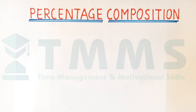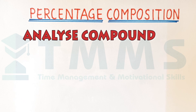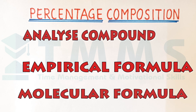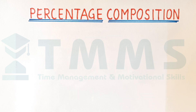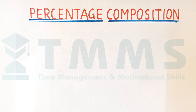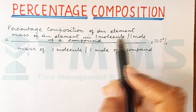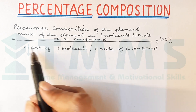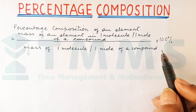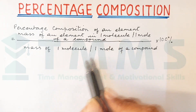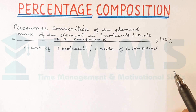Percentage composition is an important term in the senior school chemistry syllabus of all board examinations. It is mostly used to analyze a compound and also to determine the empirical formula and the molecular formula of a chemical compound. Percentage composition is the composition by mass of each element of the compound. The formula is: percentage composition of an element equals mass of that element in one molecule or one mole of a compound, divided by mass of one molecule or one mole of the compound, multiplied by 100 percent.